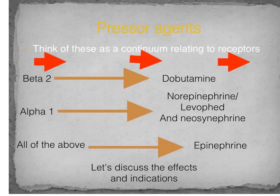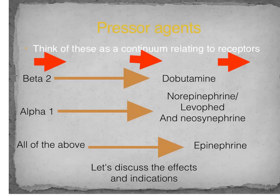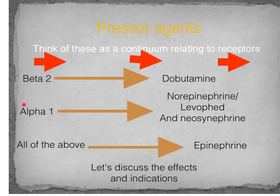Epinephrine works on every adrenergic receptor — alpha-1, beta-1, and beta-2 — making it nonspecific. It can be given for anaphylactic shock and also as a continuous infusion to treat septic shock or clinically significant bradycardia. Norepinephrine and neosinephrine are more selective to alpha-1, while dobutamine is selective to beta-1 receptors.